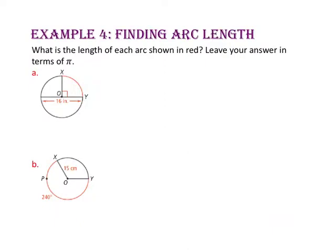In example 4, we will find arc length. What is the length of each arc shown in red? Leave your answer in terms of pi. For example A, arc XY has a measure of 90 degrees, so the ratio of arc XY to the entire circle is 90 to 360, or 1 to 4.